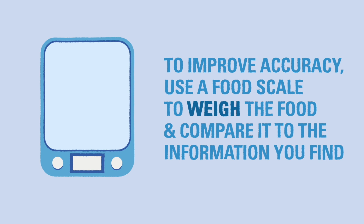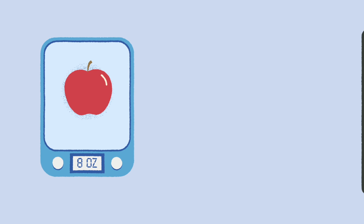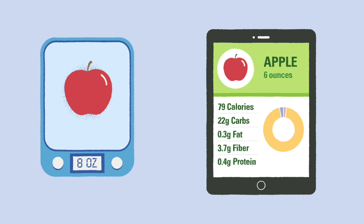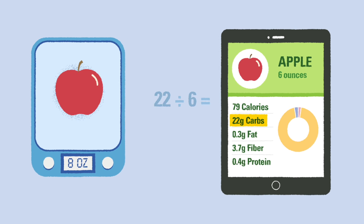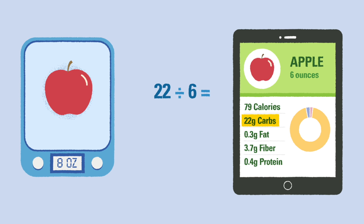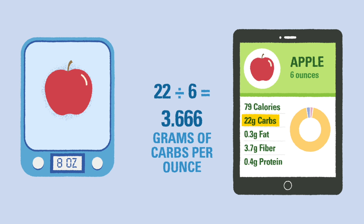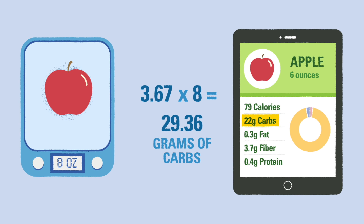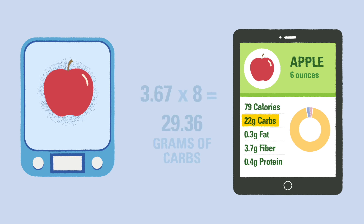You'll need to compare the weight of your food with the weight listed. For example, if you have measured an apple and found it is 8 ounces, and a credible nutrition website shows a 6-ounce apple has around 22 grams of carbs, you divide 22 grams by 6 ounces to get 3.67 grams of carbs per ounce. Multiply that by 8 ounces to find your apple has 29 grams of carbohydrate. This will also give you useful information for other apples in the future.